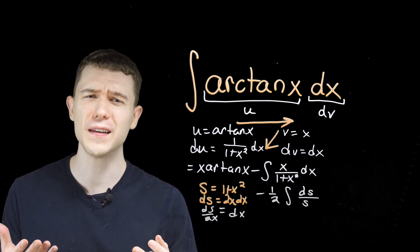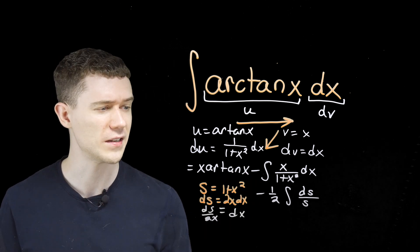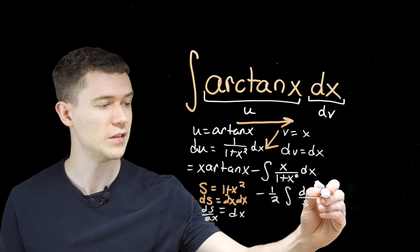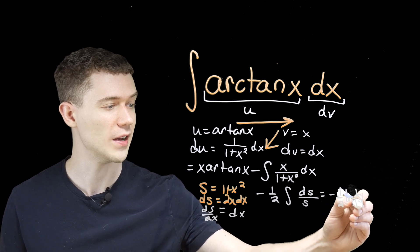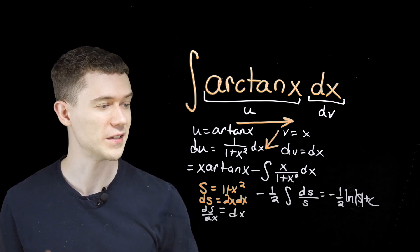Now you just have to remember, what's the antiderivative of ds over s? Well, that's going to be, with a 1 half out front, natural log, absolute value of s. I should say plus c, plus a constant here.